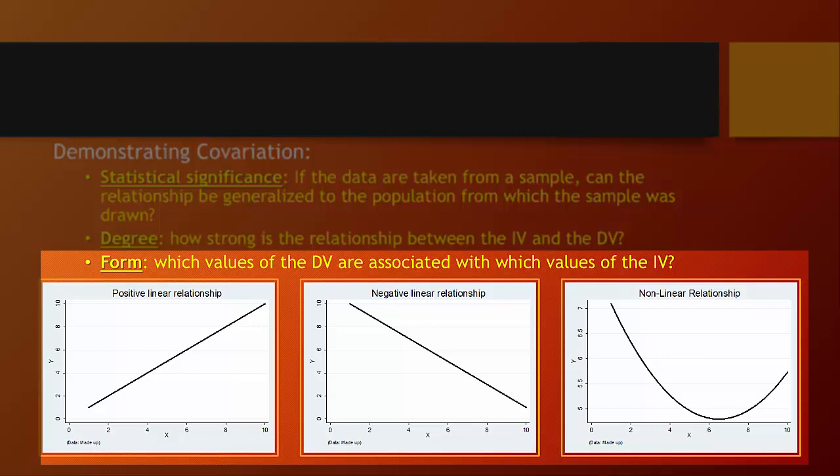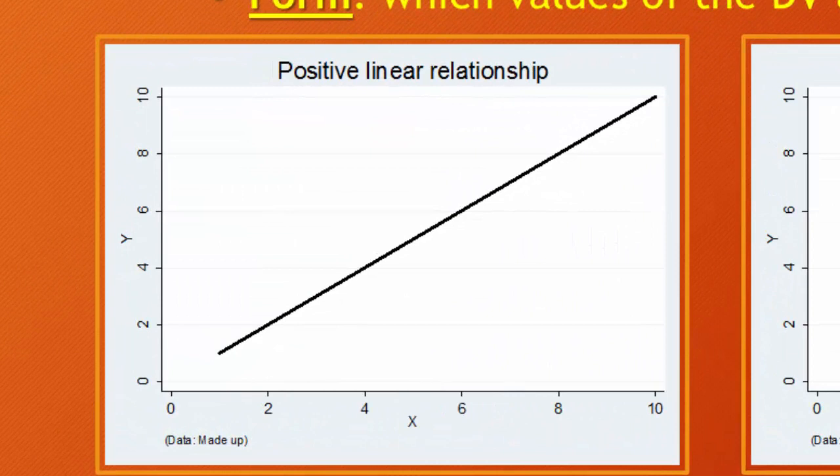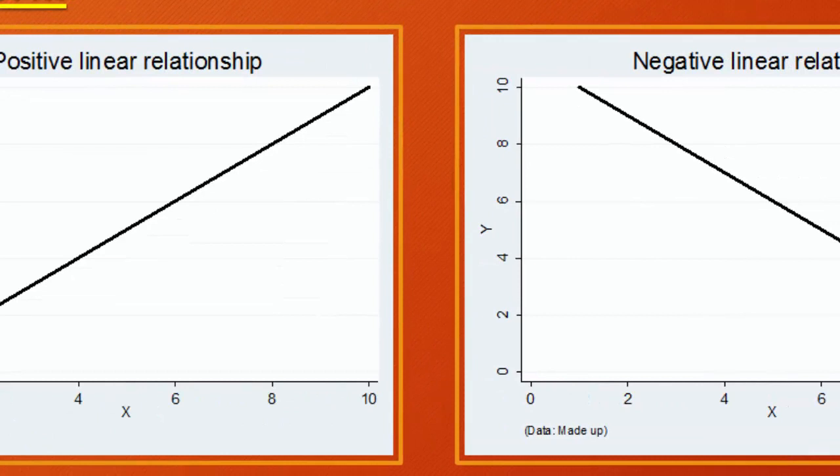And form can be expressed as positive, for example, as values of the independent variable increase, values of the dependent variable increase, or negative where they decrease.